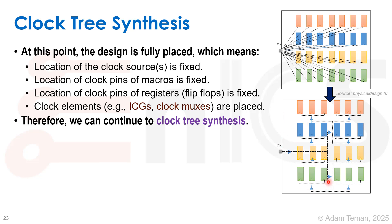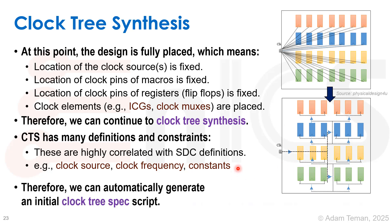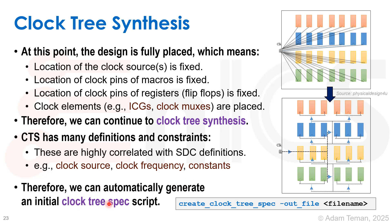Clock tree synthesis has many different definitions and constraints — it actually has its own type of language, highly correlated with SDC definitions but not identical. For example, the clock source is defined in the SDC, the clock frequency is defined in the SDC, and different types of constants with set_case_analysis are defined in the SDC. So we can get a lot of information about our clock tree just by reading the SDC, and therefore we can automatically generate an initial clock tree spec using the create_clock_tree_spec command.